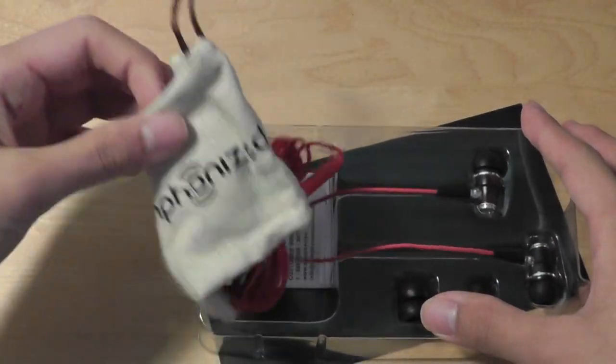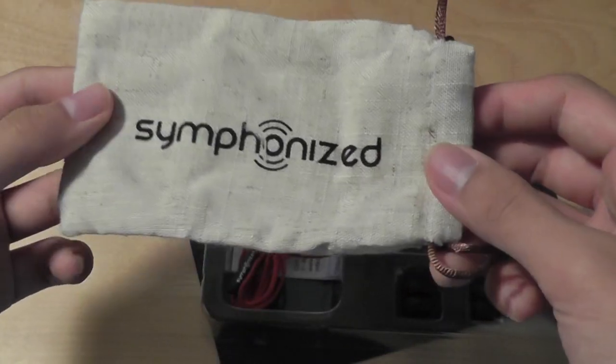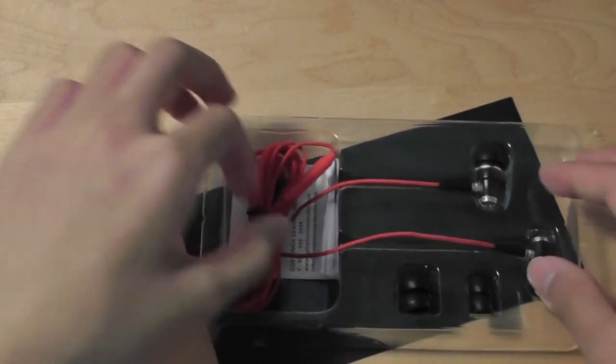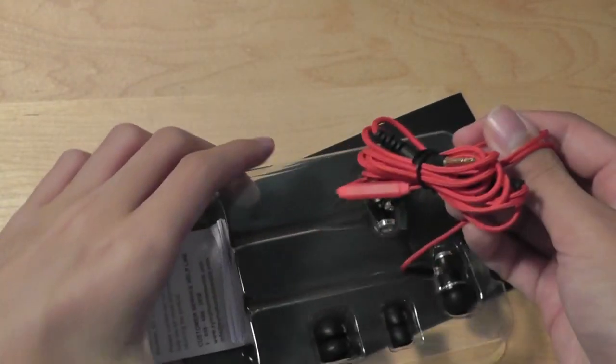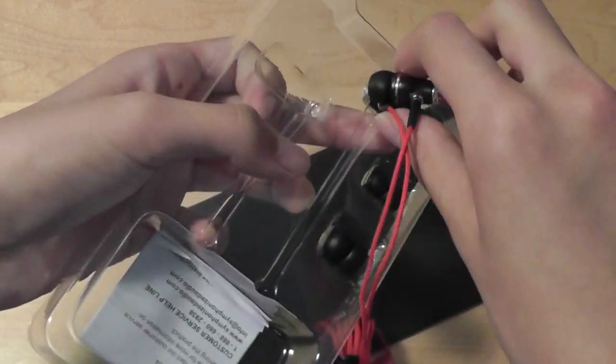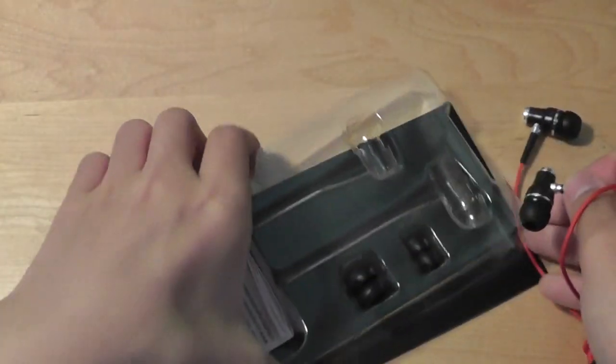So in here, we have an eco-friendly pouch that allows you to protect your earphones when you're traveling. It's a pretty nice accessory that's included. There is an instruction manual as well. And finally, we have just the earbuds themselves, and that's the packaging.